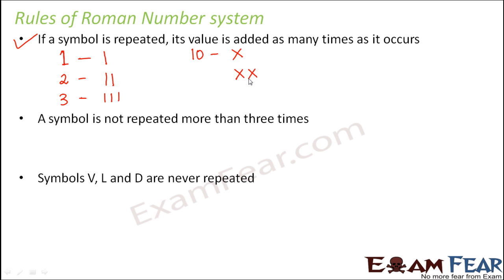Now if I write XX, what would it mean? This X is 10, this X is also 10. So 10 plus 10, that is 20. This is how we write 20. Similarly, if we write XXX, that would mean 10 plus 10 plus 10, that is 30. So if you want to write such numbers which are the sum of other numbers, you can just repeat that particular symbol as many times as you want.